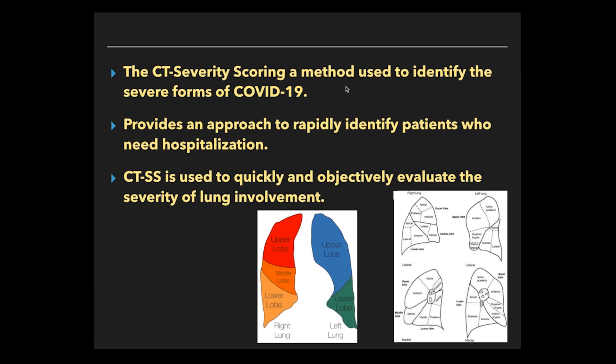CT-CVRT scoring is a method used to identify the severe forms of COVID-19. It provides an approach to rapidly identify patients who need hospitalization and further interventions like antiviral therapy, ICU mobilization, and mechanical ventilation. CT-CVRT scoring is used to quickly and objectively evaluate the severity of lung involvement.